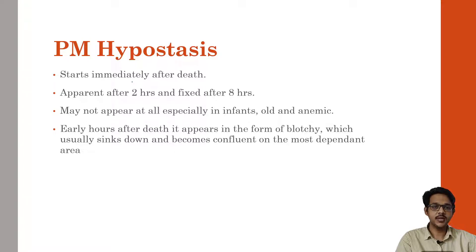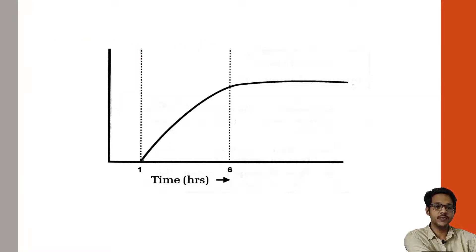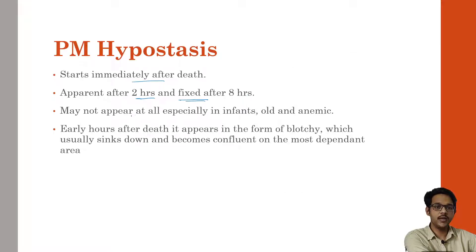Post-mortem hypostasis starts immediately after death, becomes apparent after 2 hours, and becomes fixed by 8 hours. It starts within 1 to 2 hours and up to 6 to 8 hours it becomes fixed. It may not appear early in infants, old and anemic individuals. In the early hours it appears in the form of blotchy patches which sink down and become confluent in the most dependent parts of the body.